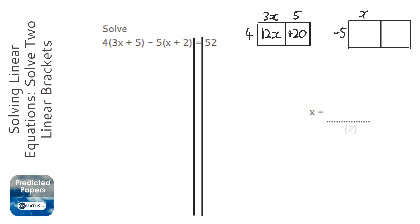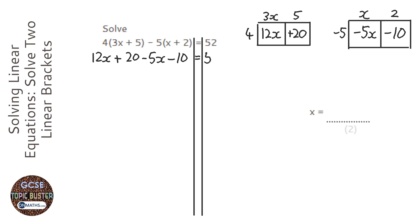5 times x plus 2, so minus 5x minus 10. Okay, and I'm just going to write that out. So 12x plus 20 minus 5x minus 10. Now we haven't done anything to the equation, so I'm just going to